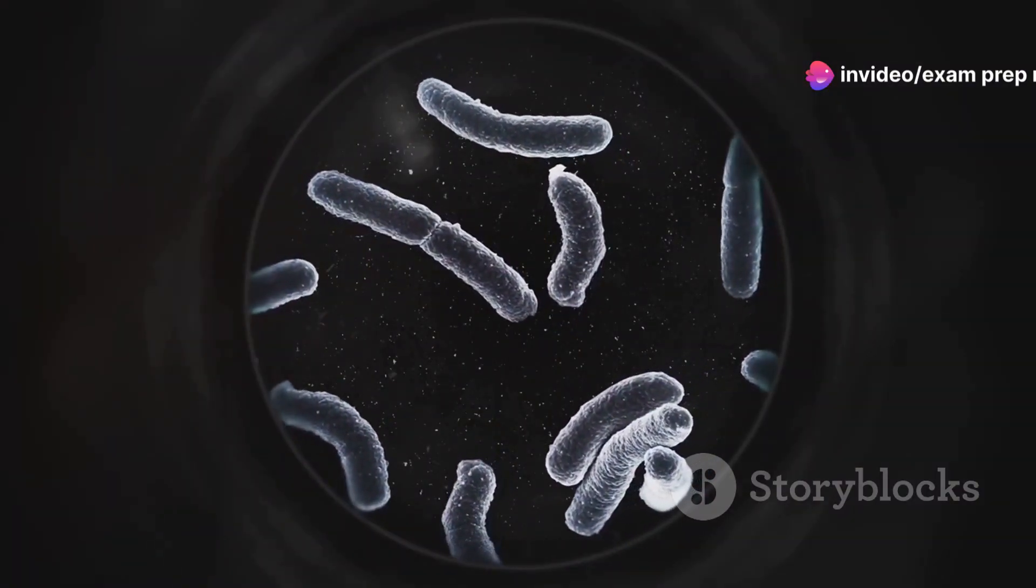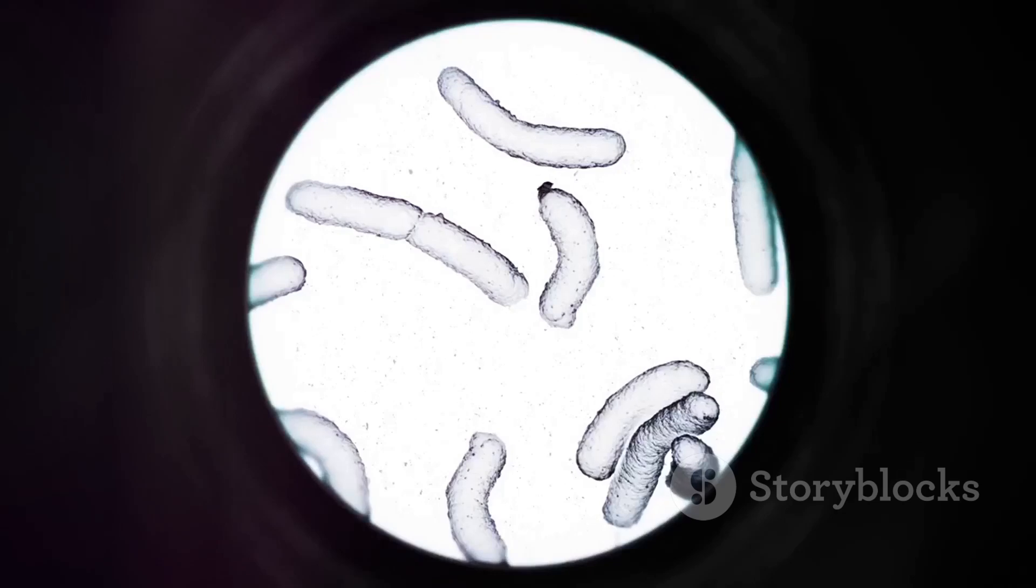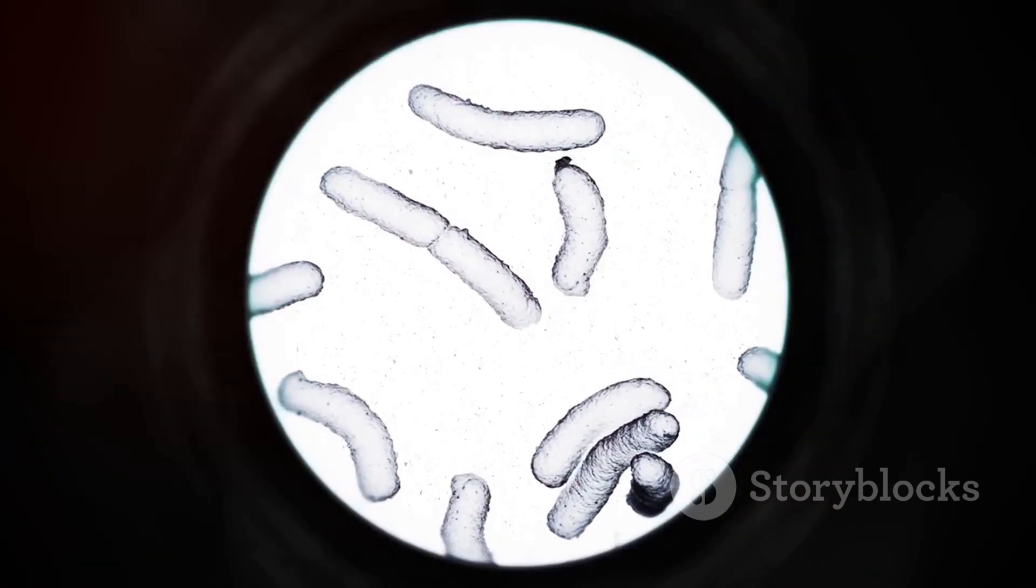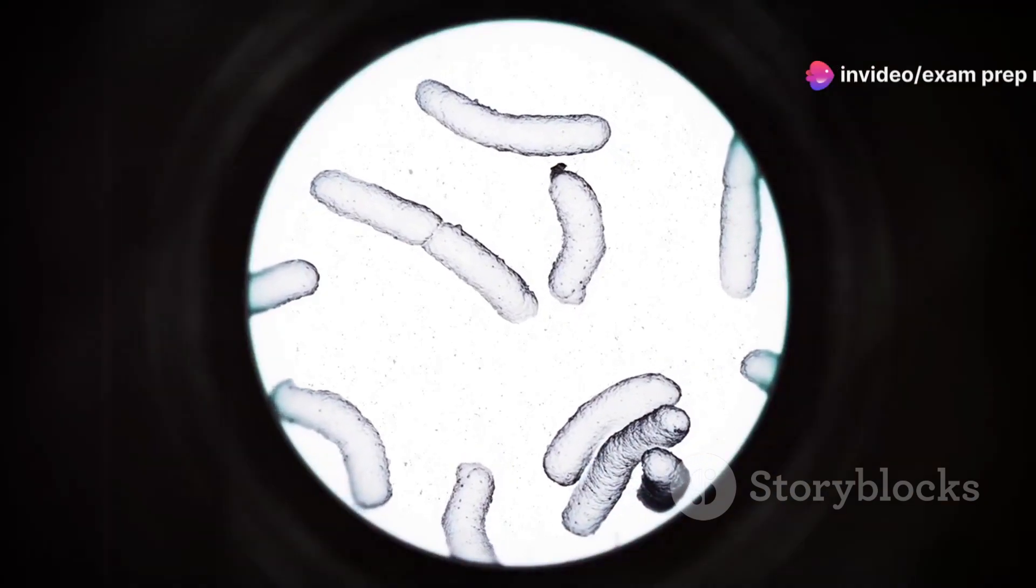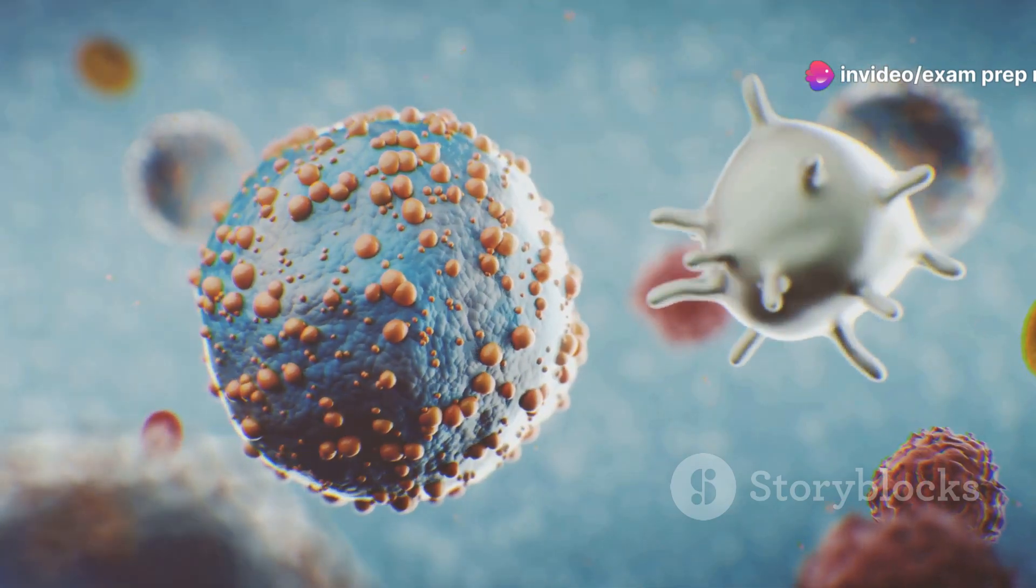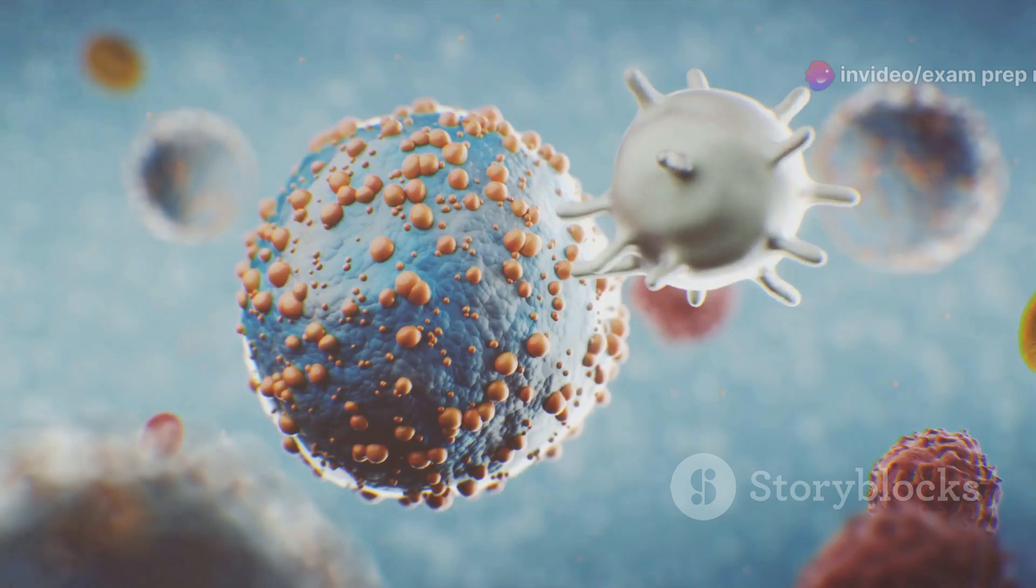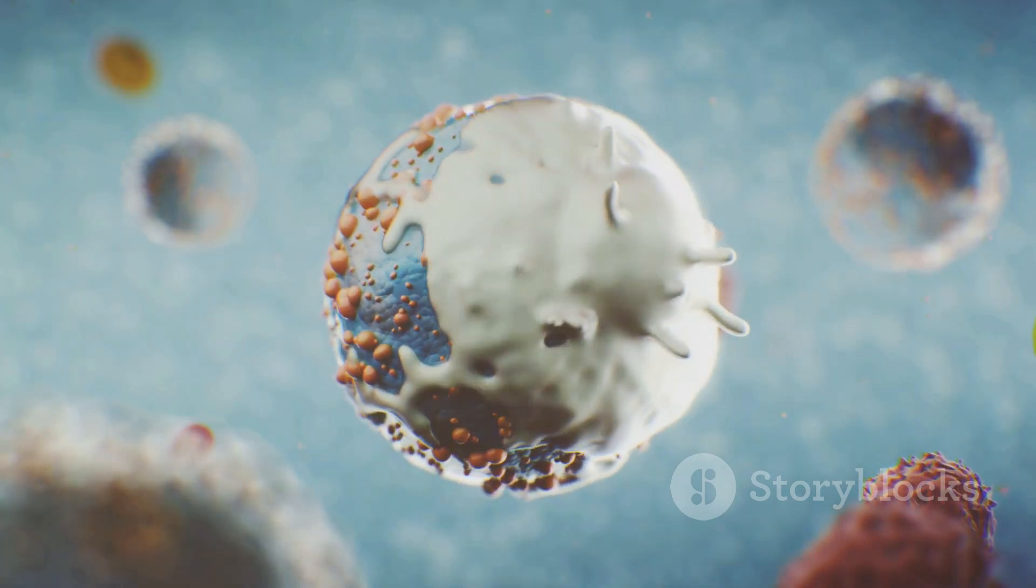Now, prepare to be amazed by the spiral-shaped spirilla, pronounced spiral-a. These bacteria look like tiny corkscrews and are known for their wiggly movements. Finally, we have the comma-shaped vibrios, pronounced vibri-o-s. Understanding these shapes helps scientists classify bacteria and study their roles in various ecosystems and even within our own bodies.